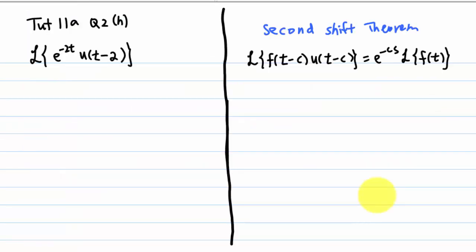Here is an example. Suppose you want to find the Laplace transform of e to the minus 2t times the Heaviside unit step function u of t minus 2.